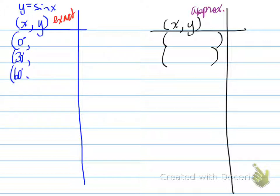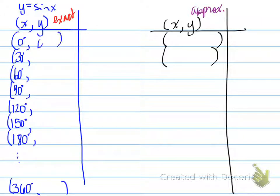So we have, for sine, we start with 0, 30, 60, 90, 120, 150, 180, and so on to 360.